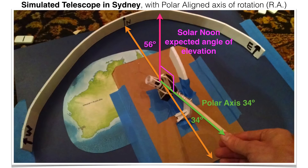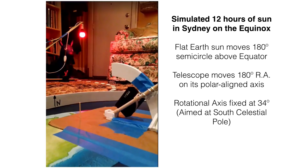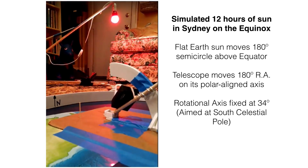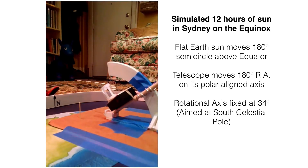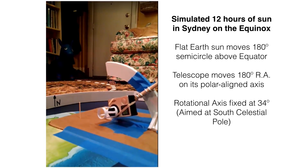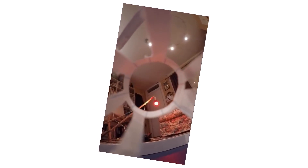At solar noon, the expected angle of elevation would be 56 degrees, though my model wasn't perfectly accurate. Looking over the shoulder of the telescope, you can see the sun moving and the telescope tracking the sun for 12 hours, finally pointing due west for sunset. My synchronization wasn't perfect, but you can see it's kind of tracking the sun — I'm on one axis of rotation — and finally it is setting due west, representing 12 hours of sunshine.